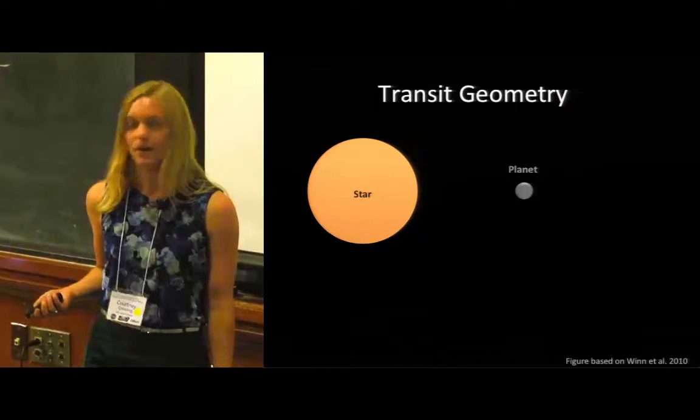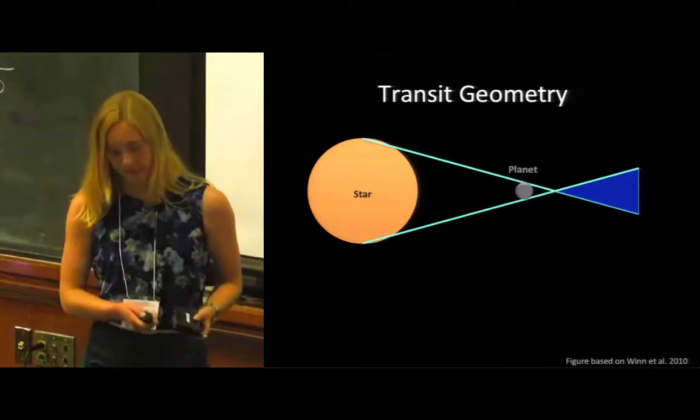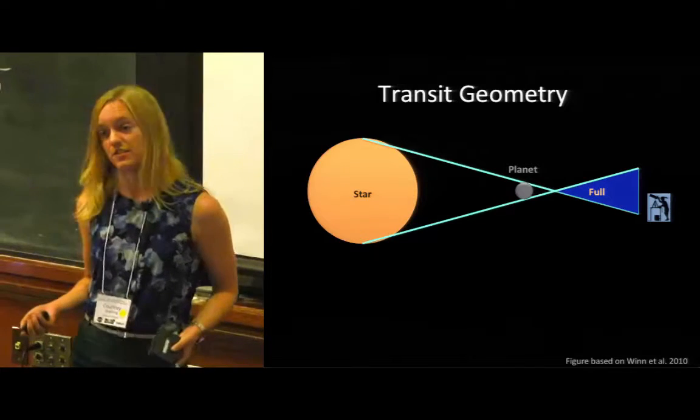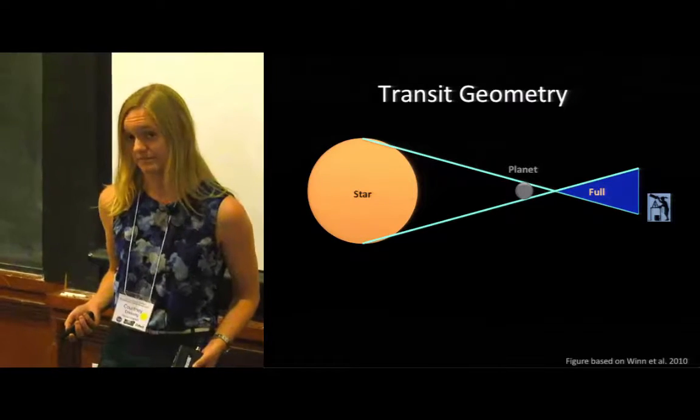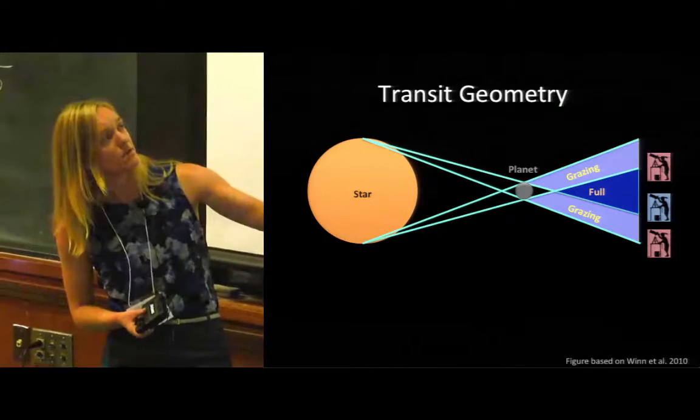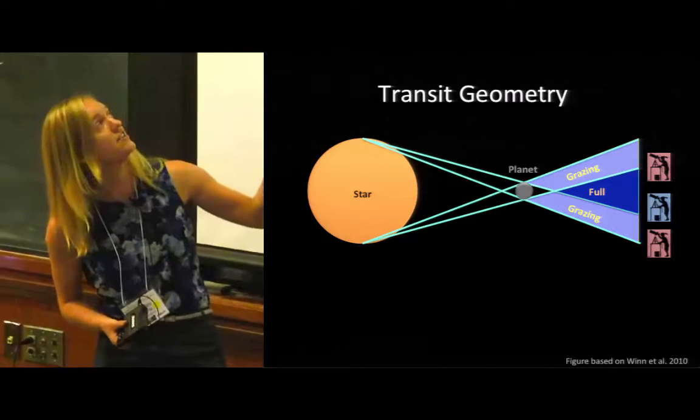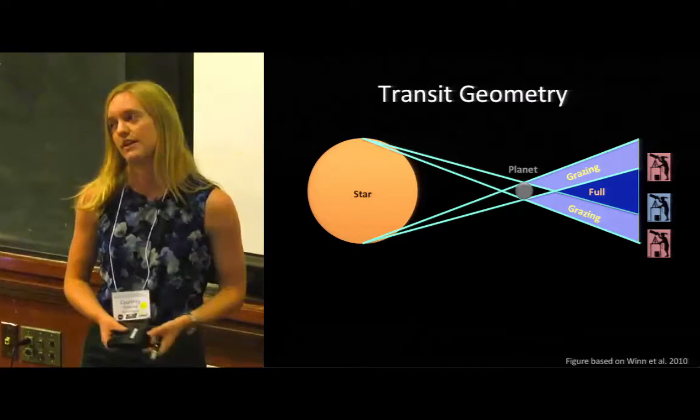So we can imagine that in some parts of space, say if we're located over here, we might actually see the planet cross in front of the star in what we would call a full transit event. Other times though, we might actually be up here or down here and then we would see part of the planet cross just the very edge of the star and that would be a grazing transit event.